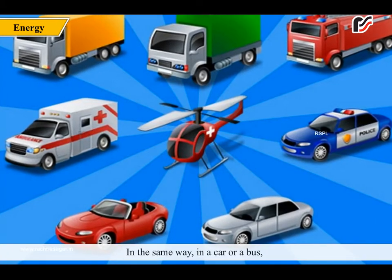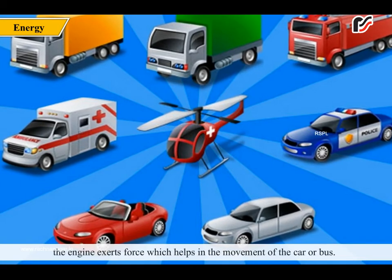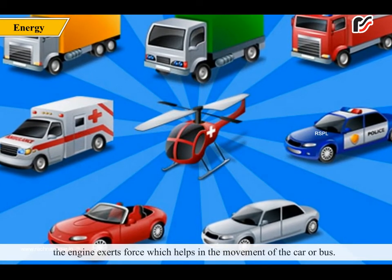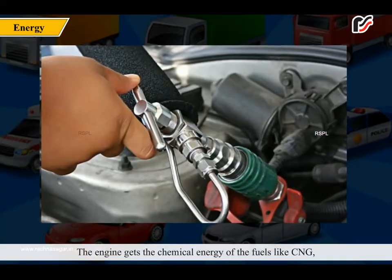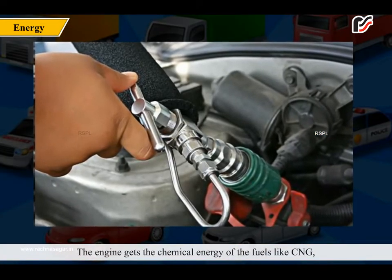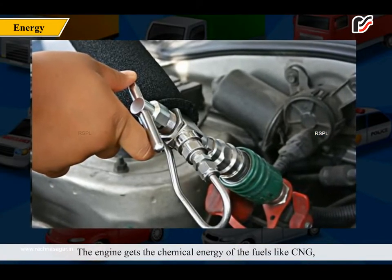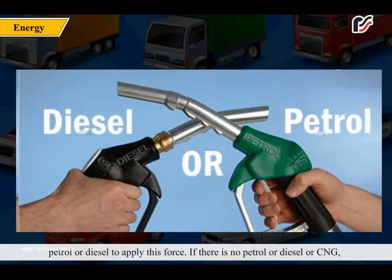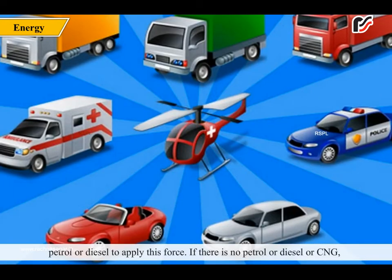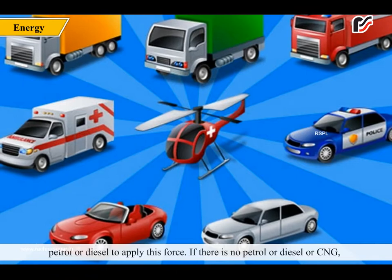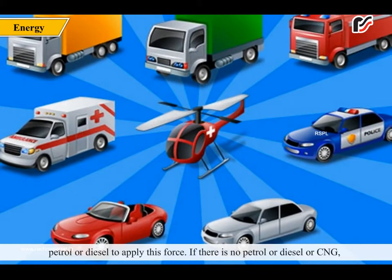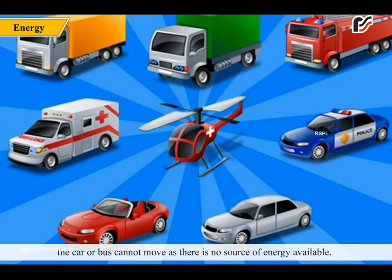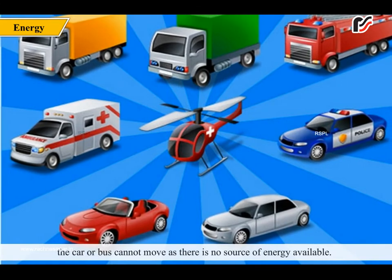In the same way, in a car or a bus, the engine exerts force which helps in the movement of the car or bus. The engine gets chemical energy from fuels like CNG, petrol or diesel to apply this force. If there is no petrol, diesel or CNG, the car or bus cannot move as there is no source of energy available.